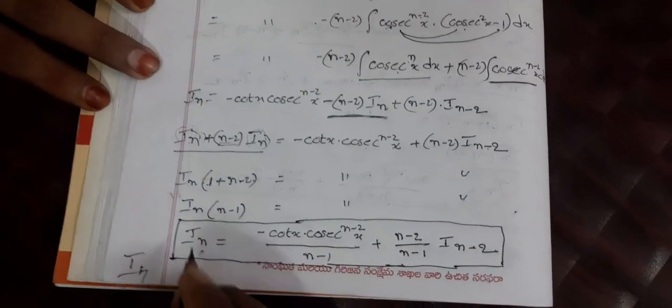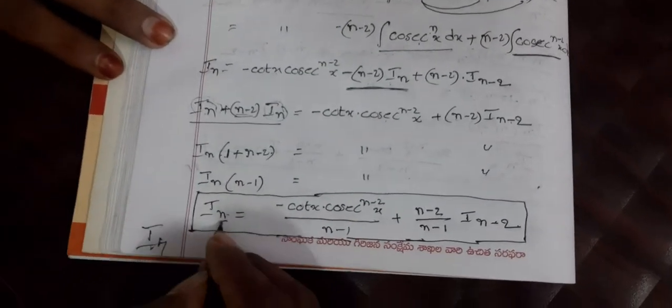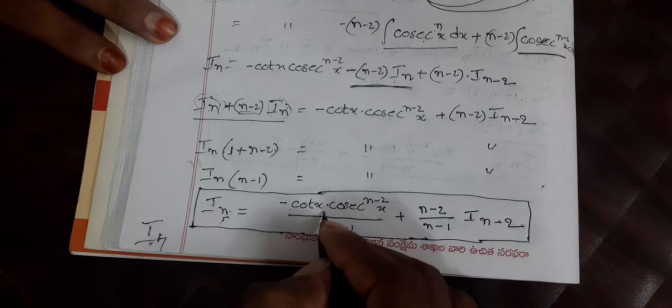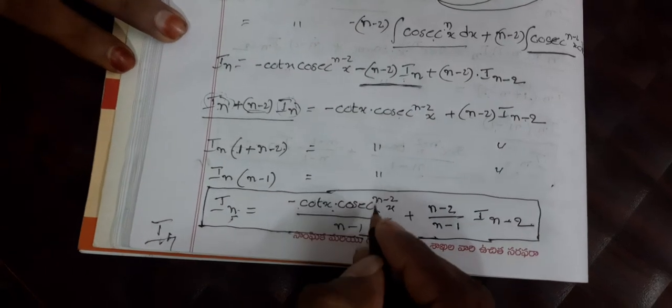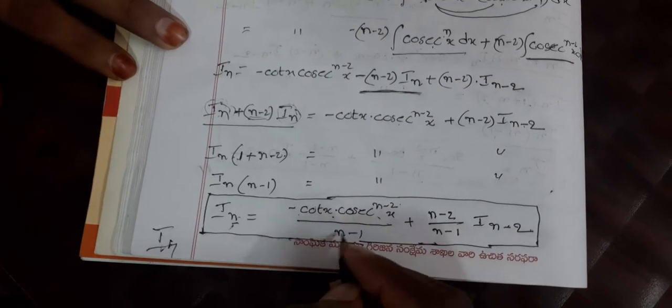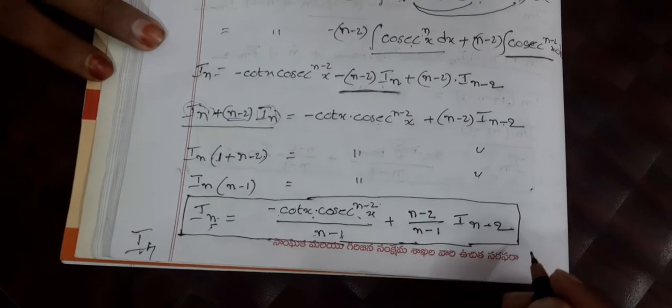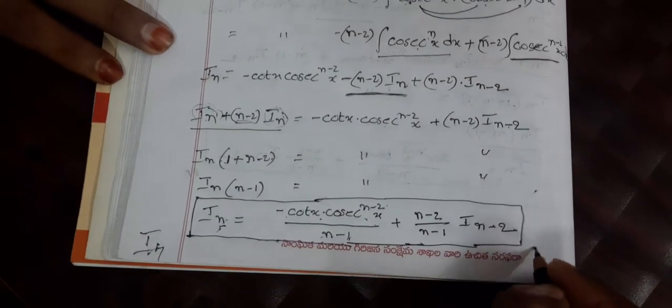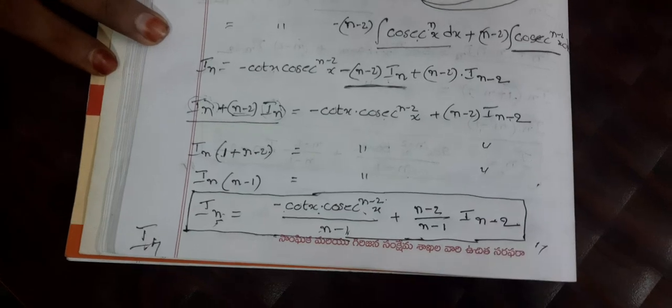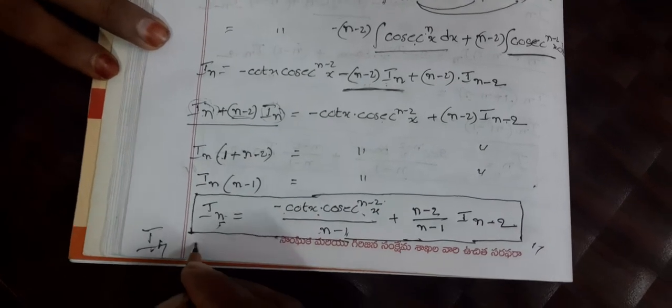For example with n = 4: I_4 = −cot(x)·cosecant²(x) / (4−1) + ... Simplify accordingly. Okay, thank you.